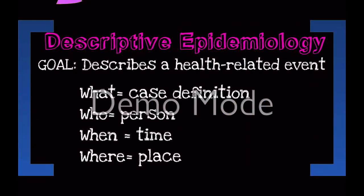In order to do this, there's descriptive epidemiology, which has the goal of describing a health-related event. Just like a reporter reporting an event, they look at the what, who, when, and where. For an epidemiologist, this is the case definition, person, time, and place.